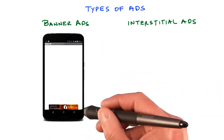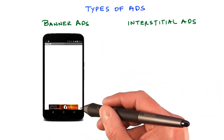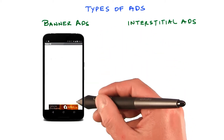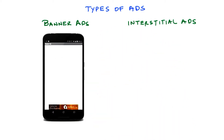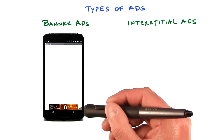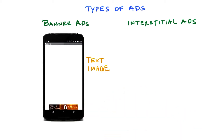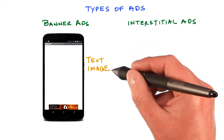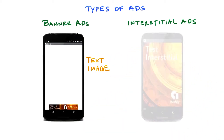Banner ads only cover a portion of the visible screen, so they can be shared with content displayed by your app. If the user clicks on the ad, a web page will be opened that has more information about the ad. Banner ads can either be text or an image, like the one you see here.